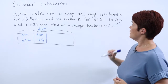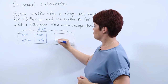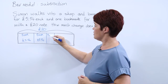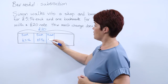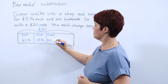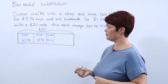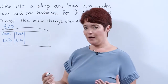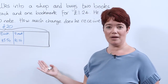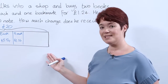He then buys one bookmark for £1.24, so we're going to have our bookmark — the bar slightly shorter to represent £1.24. Now a discussion with the pupils about why you haven't filled the whole bar would be good and what this represents.